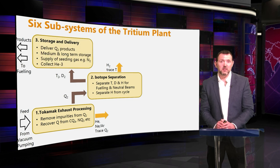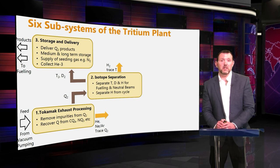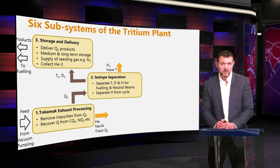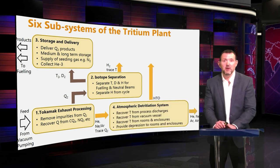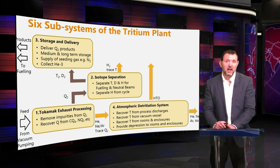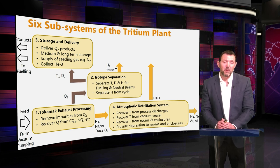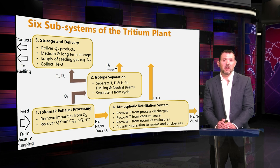The product streams of deuterium and tritium are sent to the Storage and Delivery System, which stores and buffers material ready for fueling and also allows us to introduce new tritium from overseas when we need to fill the system. Back to the impurity stream from TEPS — this is sent to the Atmospheric Detritiation System (ADS), which aims to recover as much tritium from impurities as possible. It also serves to clean up the vacuum vessel before maintenance and recovers tritium from other locations such as glove boxes.